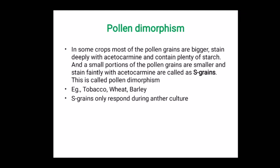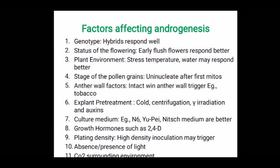Another term is pollen dimorphism. In some crops, most pollen grains are bigger and some are smaller; this kind of two different structures of pollen is called pollen dimorphism. The larger grains are generally stained deeply with acetocarmine and smaller pollen grains are stained weakly — these smaller grains are called S grains. This dimorphism is observed in tobacco, wheat, and barley. Mostly these S grains respond well for androgenesis and are more useful for anther culture than the larger-sized ones.